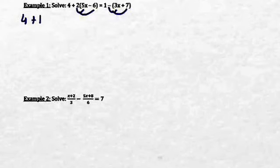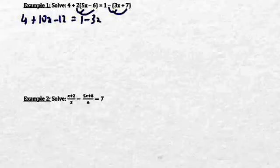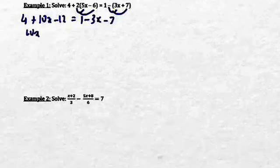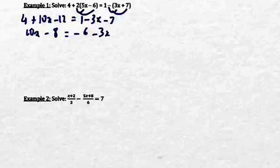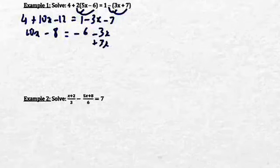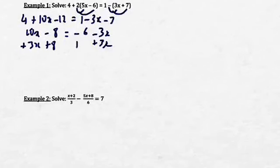When you do that, you end up with 4 plus 10x minus 12 equal 1 minus 3x minus 7, which gives me 10x minus 8 equal negative 6 minus 3x. I'm going to add 3x to both sides and add 8 to both sides. By doing so, the 8 disappears and the 3x disappears on each side.